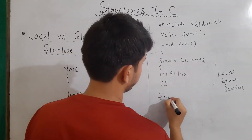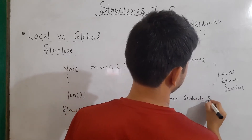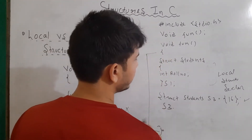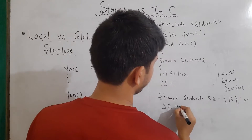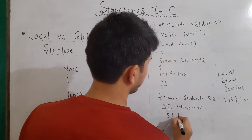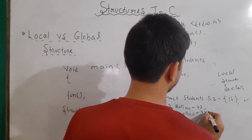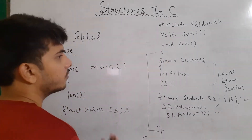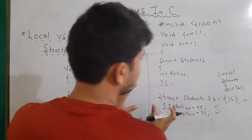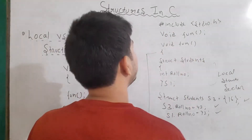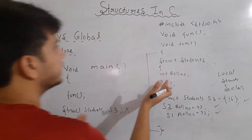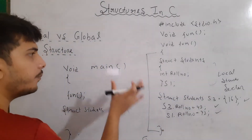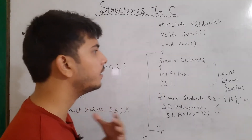When it was global, the structure variable could be made in any location. But in a local structure, the variables can only be accessed and made within the body of our function. So this structure is local to our function. I can make variables here — struct students, let's say s3 — and initialize it to 16. I can also access its properties: s3 dot roll number equals to 42, or s1 dot roll number equals to 72. Remember that in a local structure, the scope will be within the block of our function and cannot be accessed anywhere else, whereas the scope of a global structure is universal.